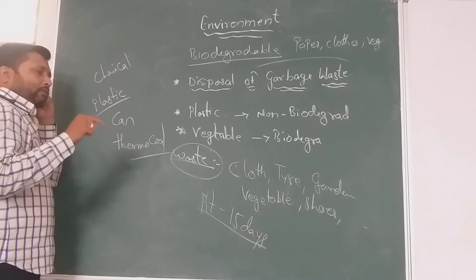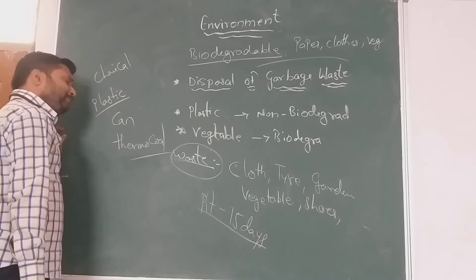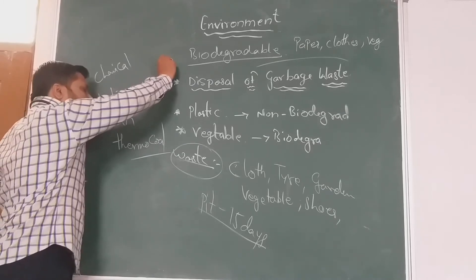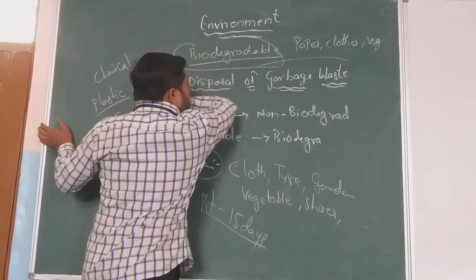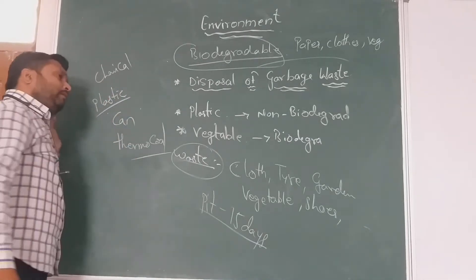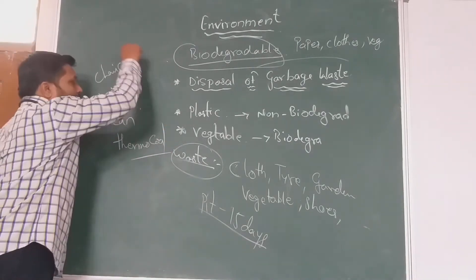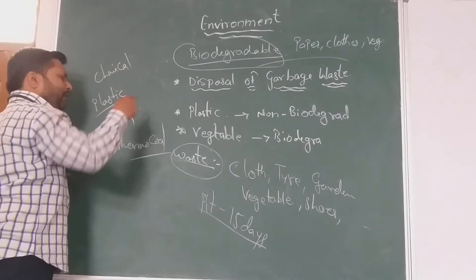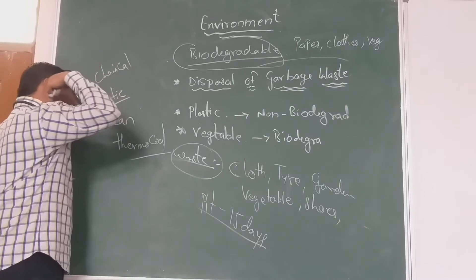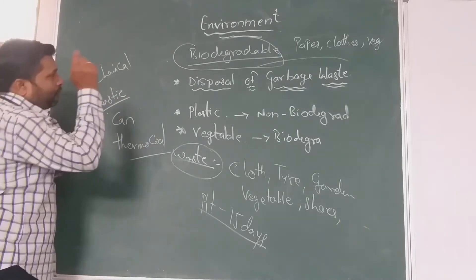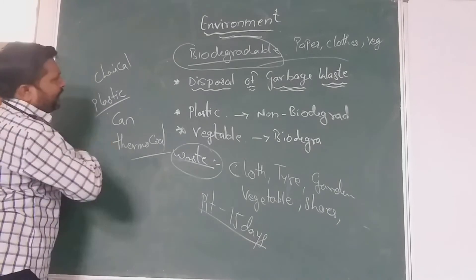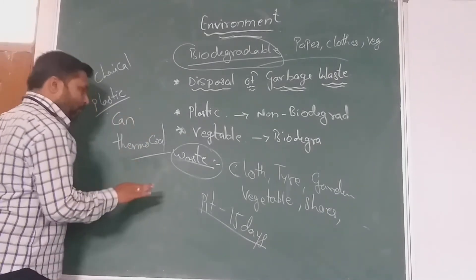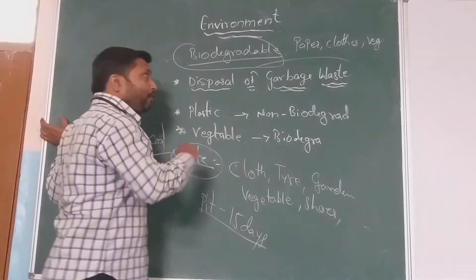With this activity, you have to collect information from the internet or the library about biodegradable and non-biodegradable substances — the substances which are going to be decomposed and which are not going to be decomposed. There is one more activity where you can do this in the classroom or any area — take examples of things, identify which are going to be decomposed and which are not going to be decomposed, and keep them separately.